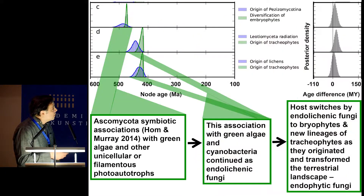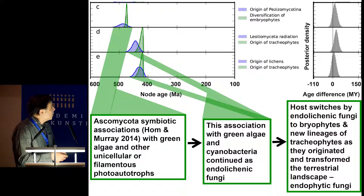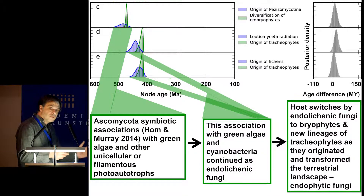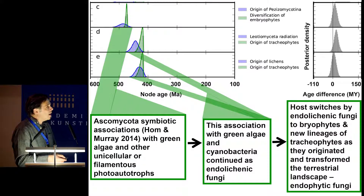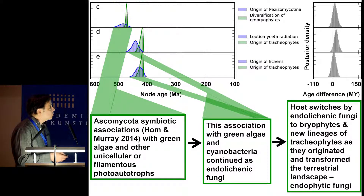They demonstrated this with different yeasts in co-growth experiments with Chlamydomonas. So what we think happened is that the Leotiomyceta and Pezizomycotina were in symbiotic association with green algae and other unicellular or filamentous photoautotrophs. This association then continued within lichens that originated later, giving rise to endolichenic fungi. Then there were host switches by endolichenic fungi to bryophytes and new lineages of tracheophytes, giving rise to endophytic fungi.